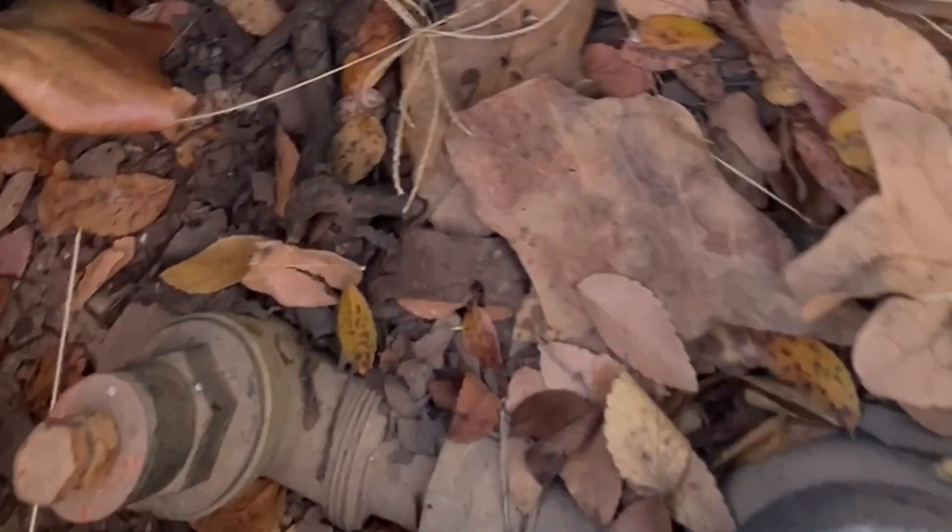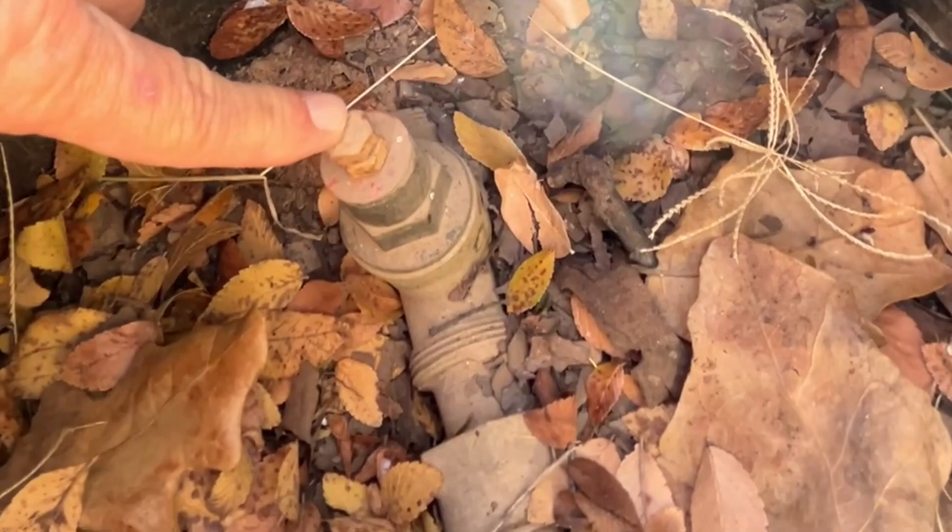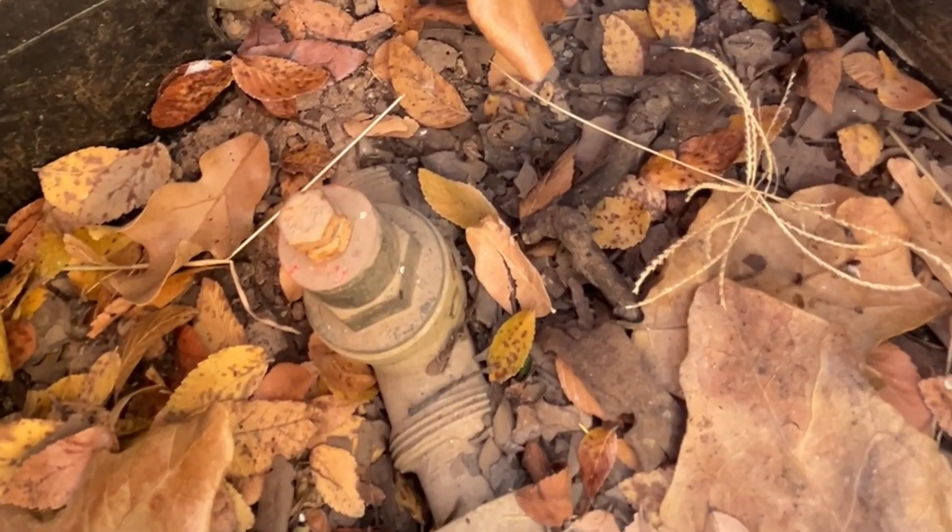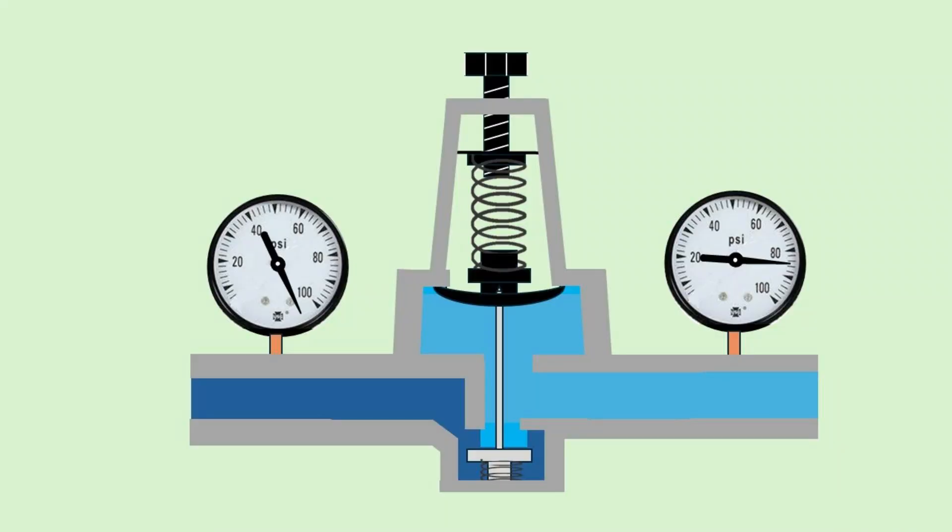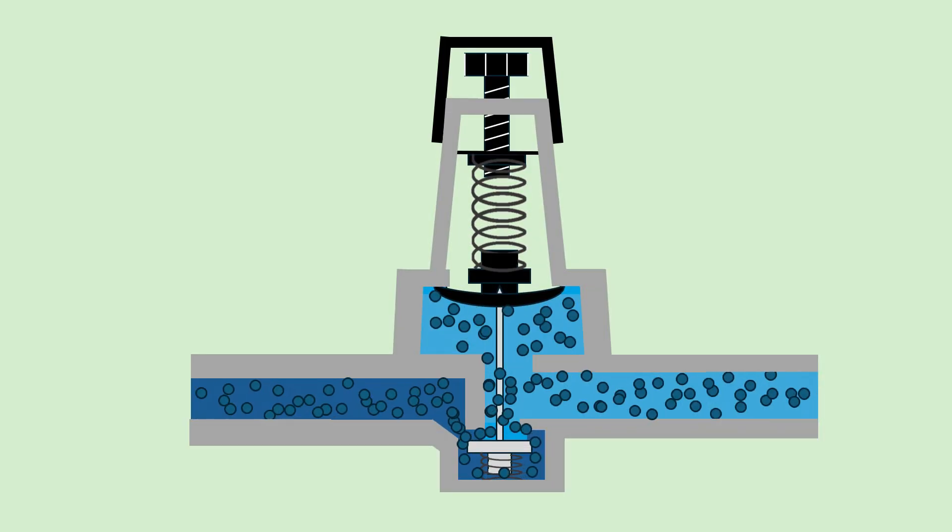You may ask, why should I care about a pressure regulator? You may have one of these near your water meter. They're used to lower the pressure of the water supplied from your city to a level safe enough that the water lines and fixtures in your home are not damaged by high water pressure.